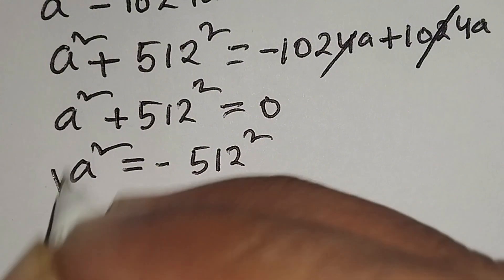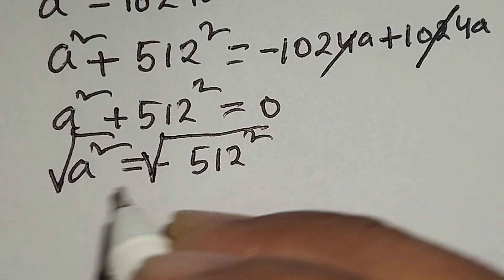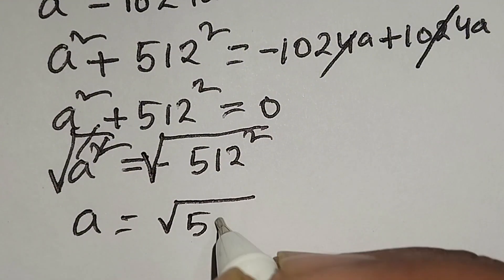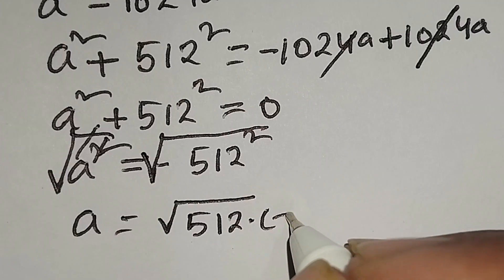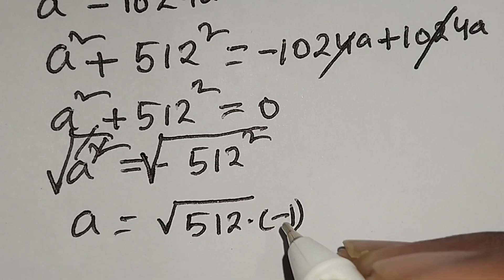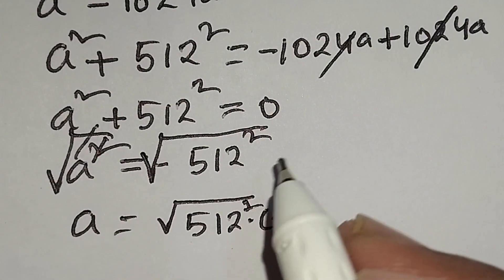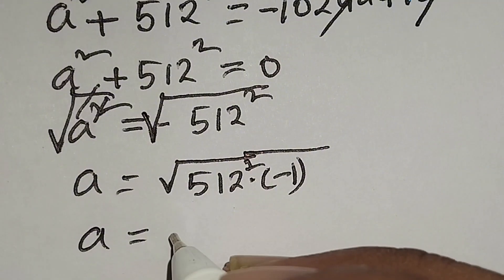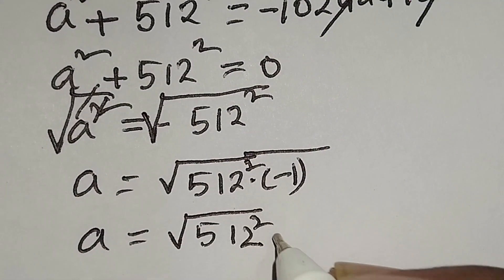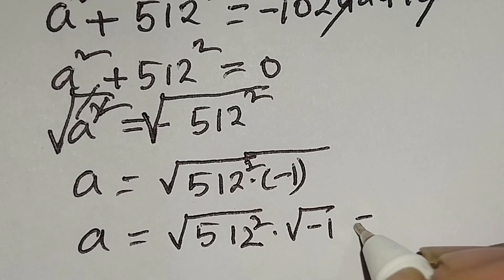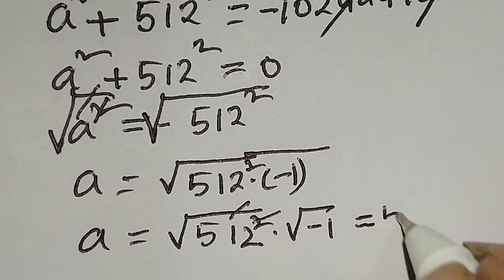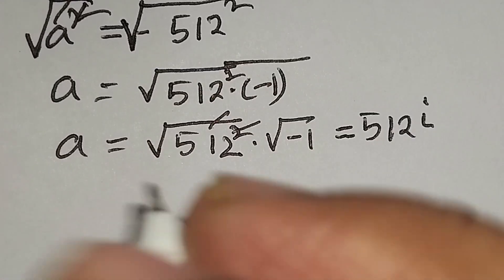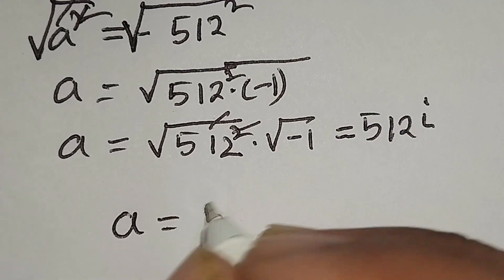Now we take the square root of both sides. The square and square root cancel on the left, giving a equals square root of negative 512 squared. We can write this as square root of 512 squared times square root of negative 1. The square root of 512 squared is 512, and the square root of negative 1 equals i, so our final answer is a equals 512i.